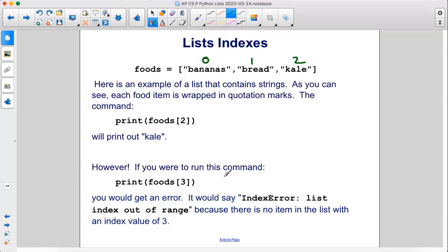However, if you were to run this command, print foods three, you would get an error. It would say index error, list index out of range, because there is no item in the list with an index value of three.